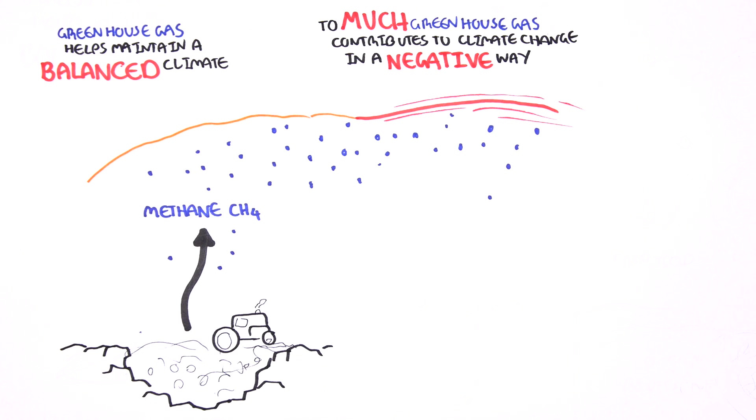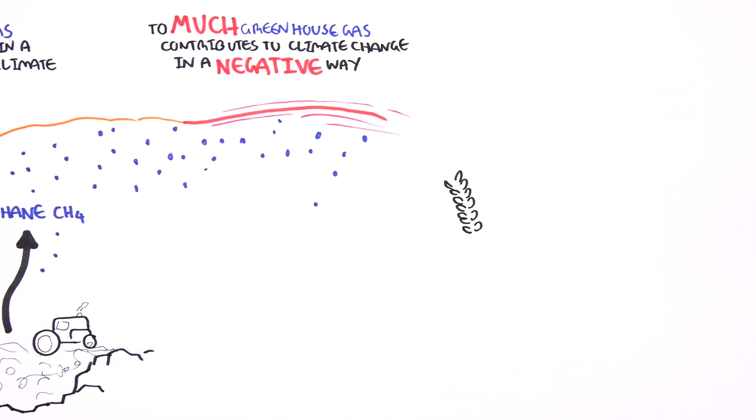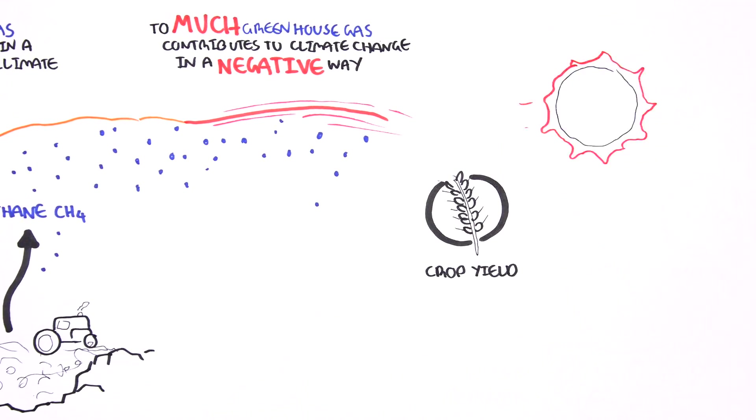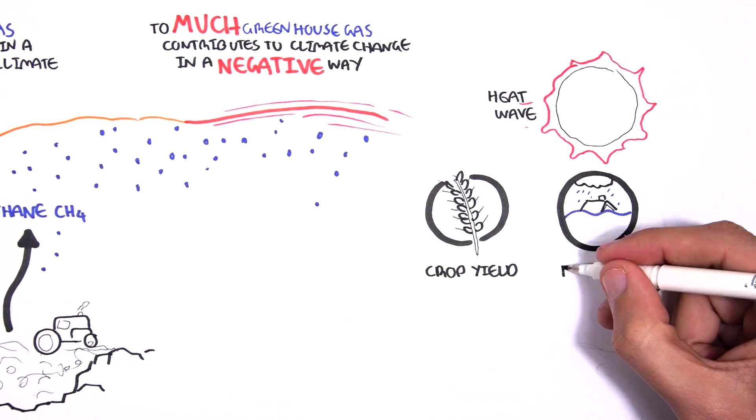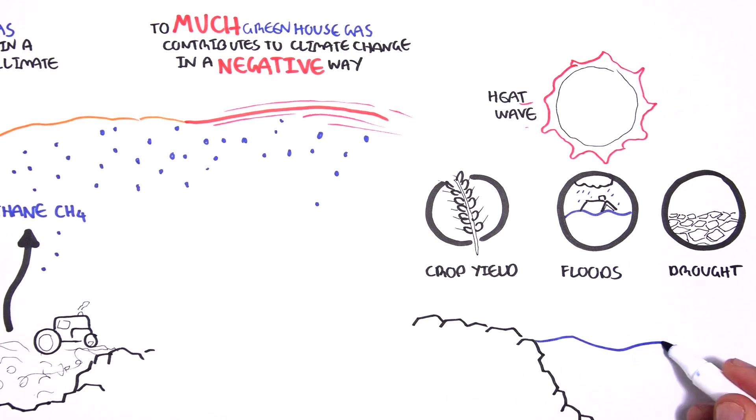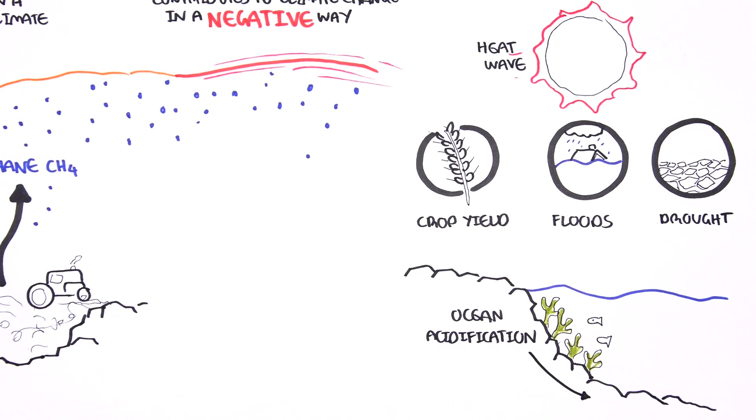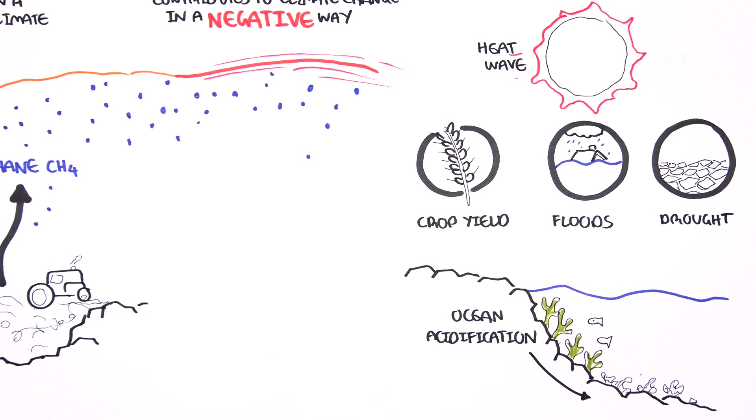This is one of the greatest threats to our food system. Climate change in turn will affect crop yield, cause natural disasters, heat waves, floods, droughts, and ocean acidification. Climate change will most likely increase the prices of food, affecting poor people or the ones who cannot afford it the most.